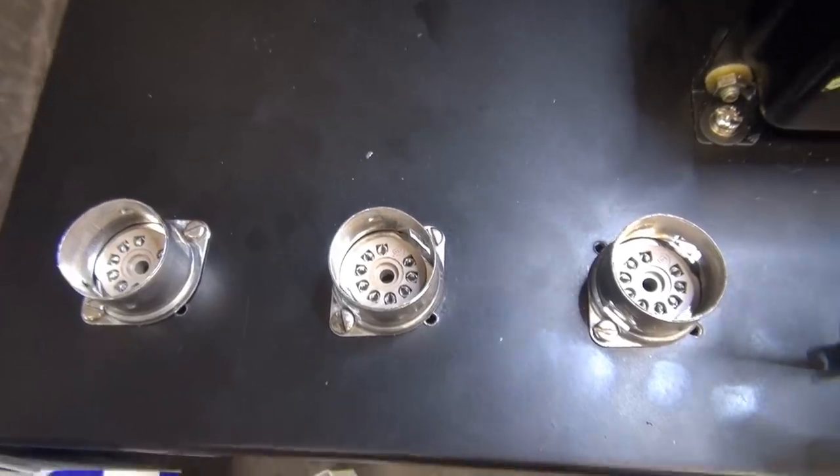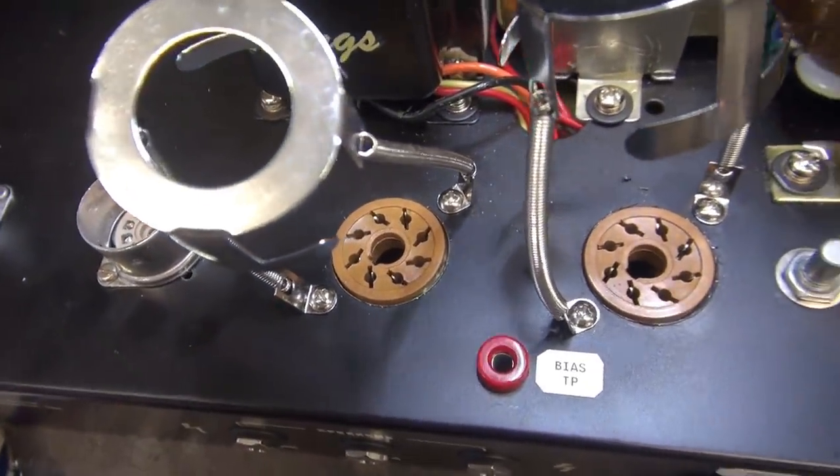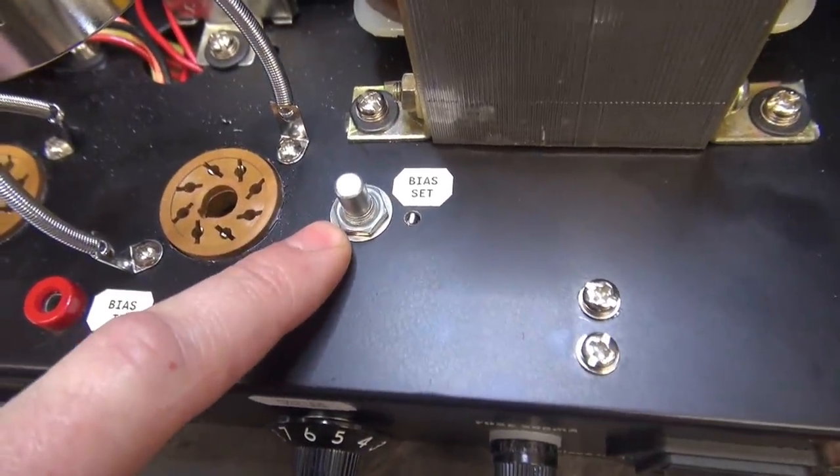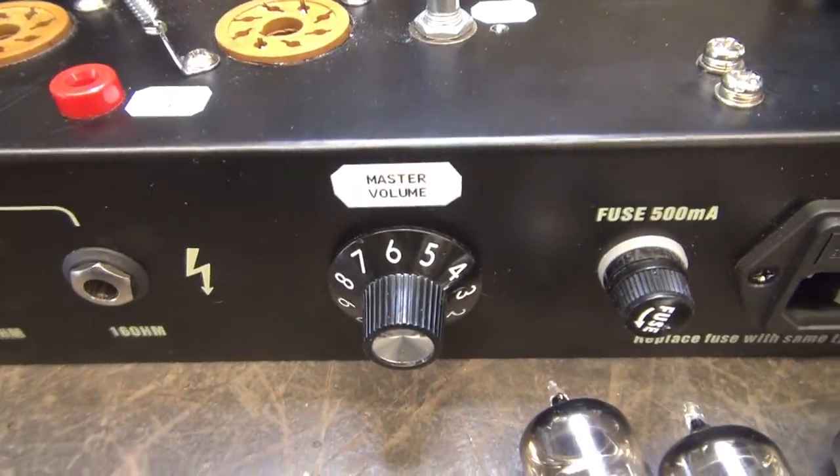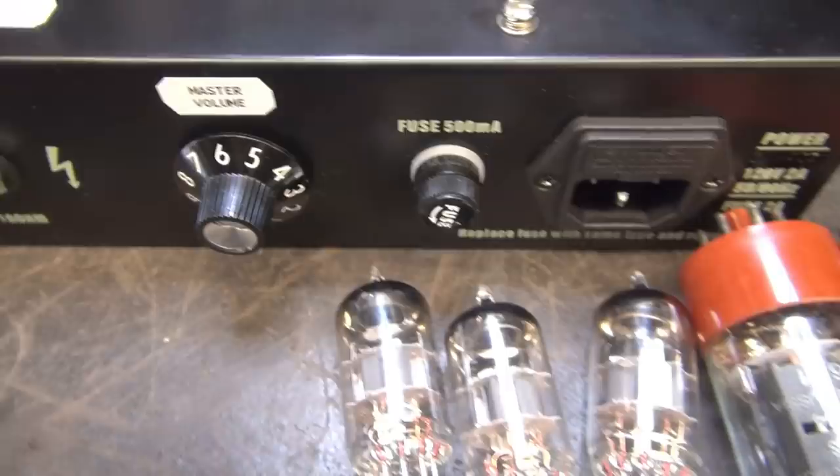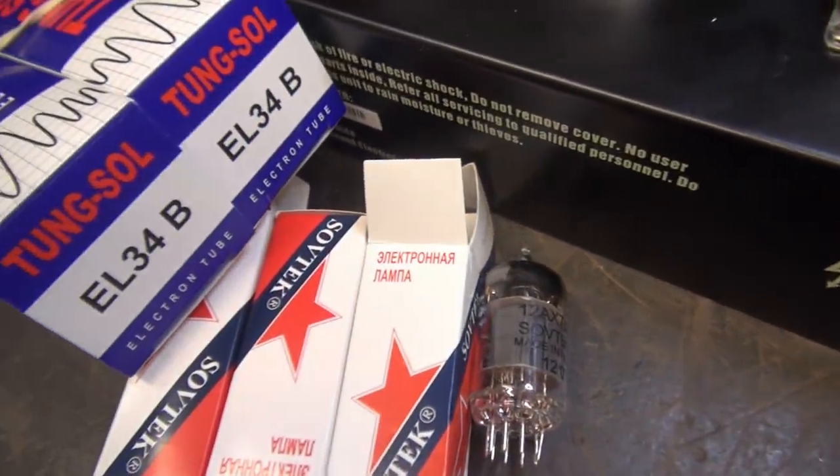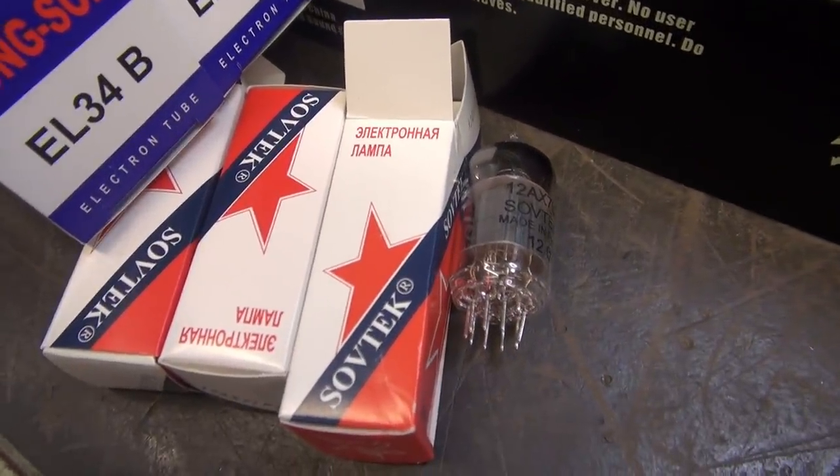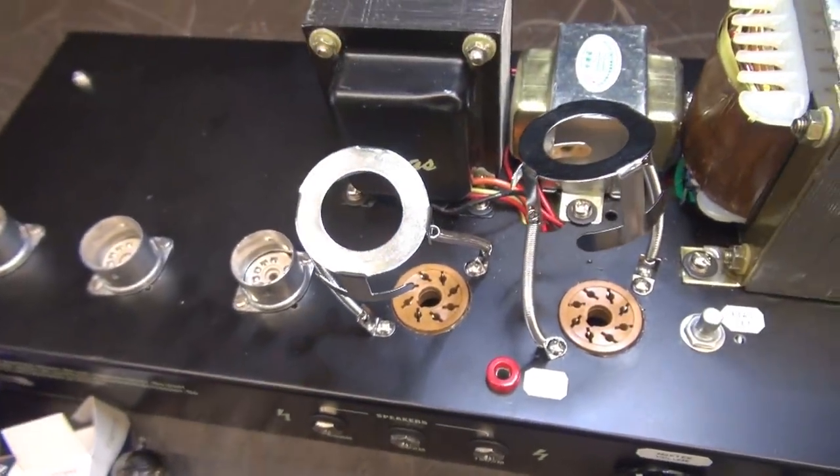So I have all the new tube sockets installed and wired up. There's the new octo sockets. We have a bias test point now. This is your bias adjustment for the final output tubes and a master volume. So here are the old tubes and I'm going to install new tubes. New set of EL34s and the SovTech LPS type 12AX7s. Then we're going to give this thing a final check out.